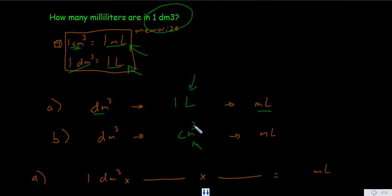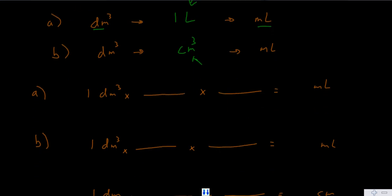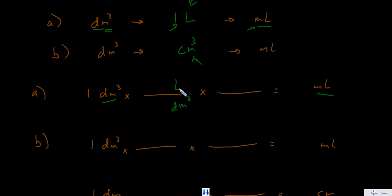Let's explore option A. We need to go from decimeters cubed into milliliters by going into liters first and then into milliliters. Right now decimeters cubed is on the top, so to get rid of that unit we're going to put it on the bottom. Then we'll want to get into liters, so we'll put that on the top. And then we want to ultimately get into milliliters from those liters.